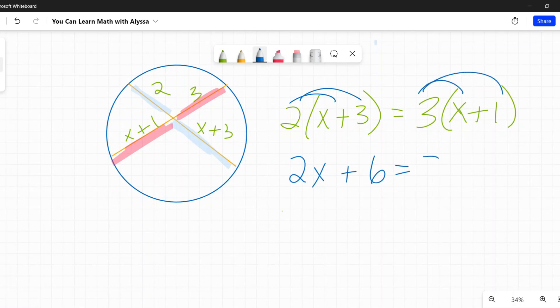So you're going to distribute 2 times X is 2X, 2 times 3 is 6 on the right side. 3 times X is 3X plus 3 times 1 is 3. Now I want all the numbers on one side, all the variables on the other. So I'm going to subtract 2X from both sides, get all the X's on one side, the X's disappear from the left. And now I just have a single X on the right, plus 3. And then I'm going to get rid of that 3 by subtracting it. And so on the left, 6 minus 3 is 3. And on the right, I just have X.